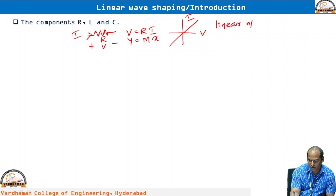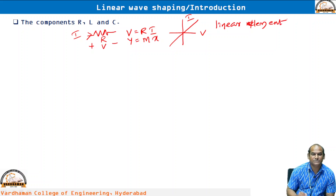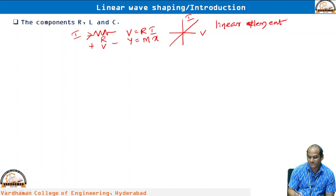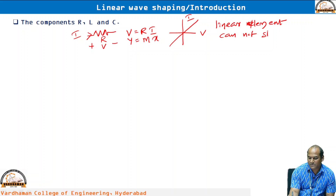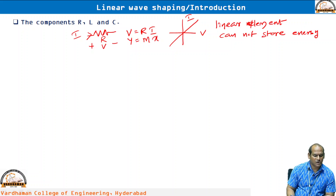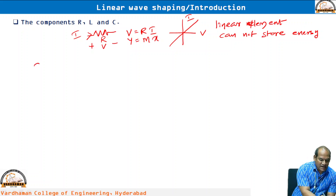The conclusion is: resistor is a linear element. Resistor cannot store energy — resistor dissipates power in the form of heat. These are the fundamental points we should know about the resistor.